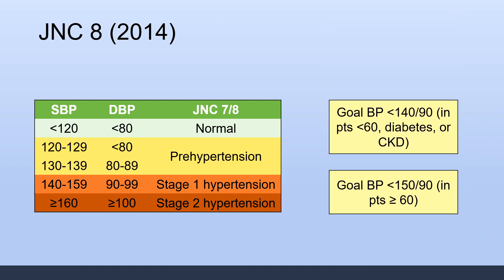What they basically did was make the blood pressure targets a little more lenient. Now all patients had a goal blood pressure of less than 140 over 90, including diabetes or CKD patients. In elderly patients, the goal blood pressure was actually less than 150 over 90, based on recent studies which showed no benefit to treating elderly patients below a blood pressure of 140.